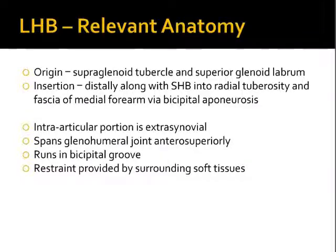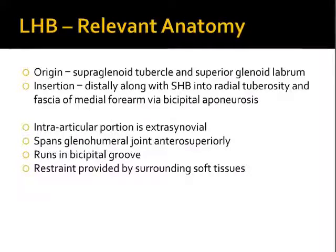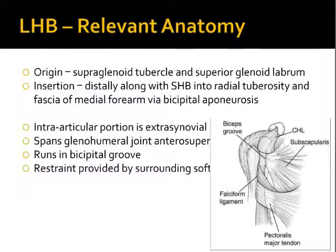The intra-articular portion of the long head biceps is extrasynovial and spans across the anterior aspect of the glenohumeral joint. Where it runs through the bicipital groove, the restraint of the long head biceps anteriorly is provided by the soft tissues at the front of the shoulder, as illustrated here.